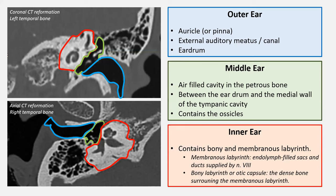The membranous labyrinth contains specialized neuronal cells responsible for detecting movement — in the case of the vestibule and semicircular canals — and for detecting sound and translating it into electrical signals transferred to the brain. The bony labyrinth consists of periosteum-lined bony cavities in the inner ear filled with perilymph fluid.